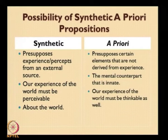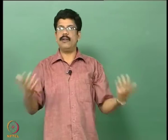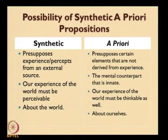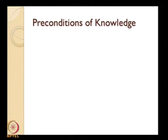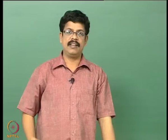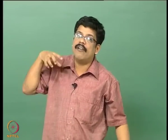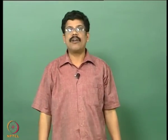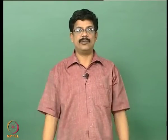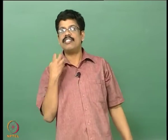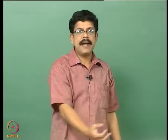Our experience of the world must be thinkable as well. Knowledge should be about the world, but we are not just photographers copying what is there — we contribute, and that is the Kantian point. The way in which we conceptualize the world requires instruments that are a priori, part of our mental structure. This is why Kant introduced what he called a Copernican revolution in philosophy — he made the human mind the center of the knowledge acquisition process, just as Copernicus made the sun the center of the universe.